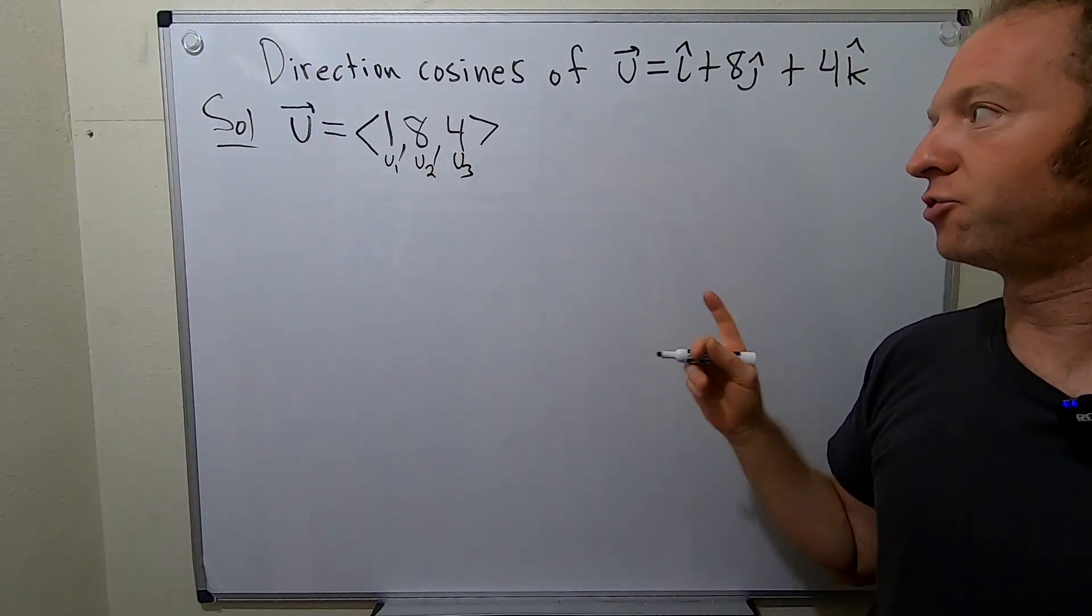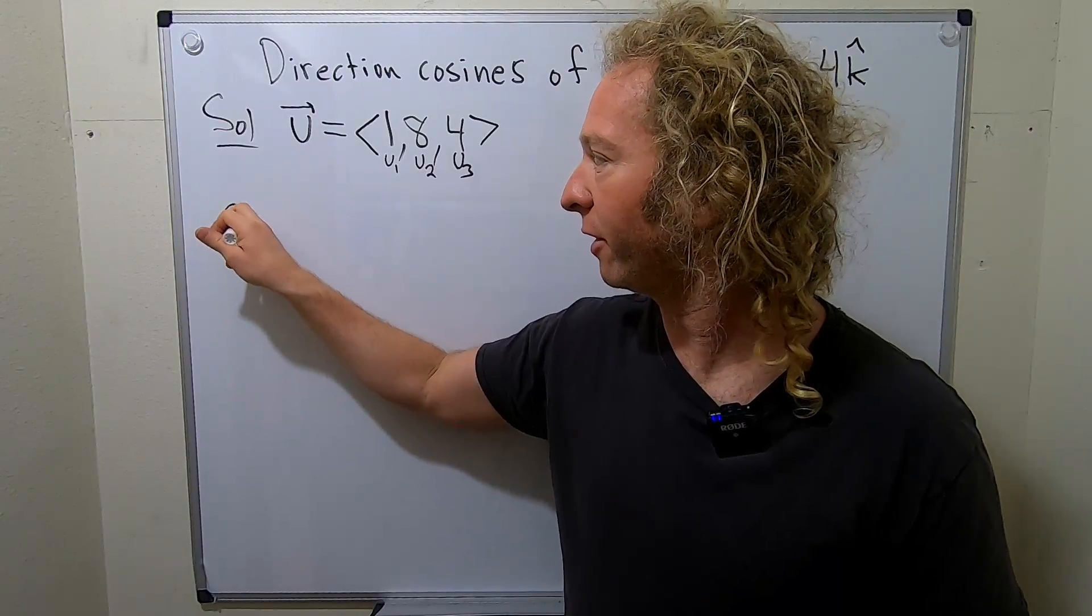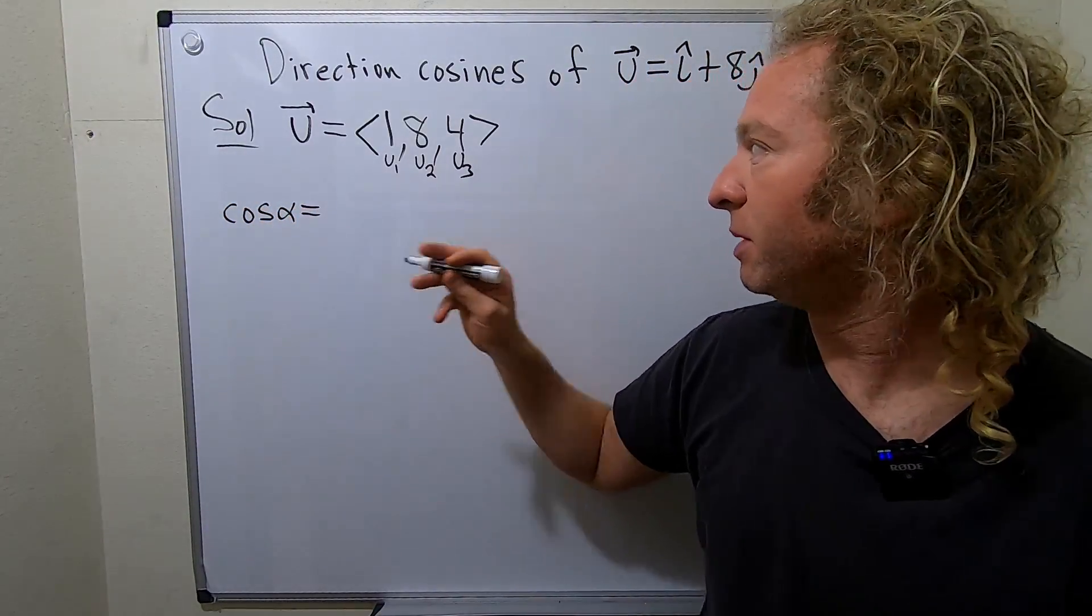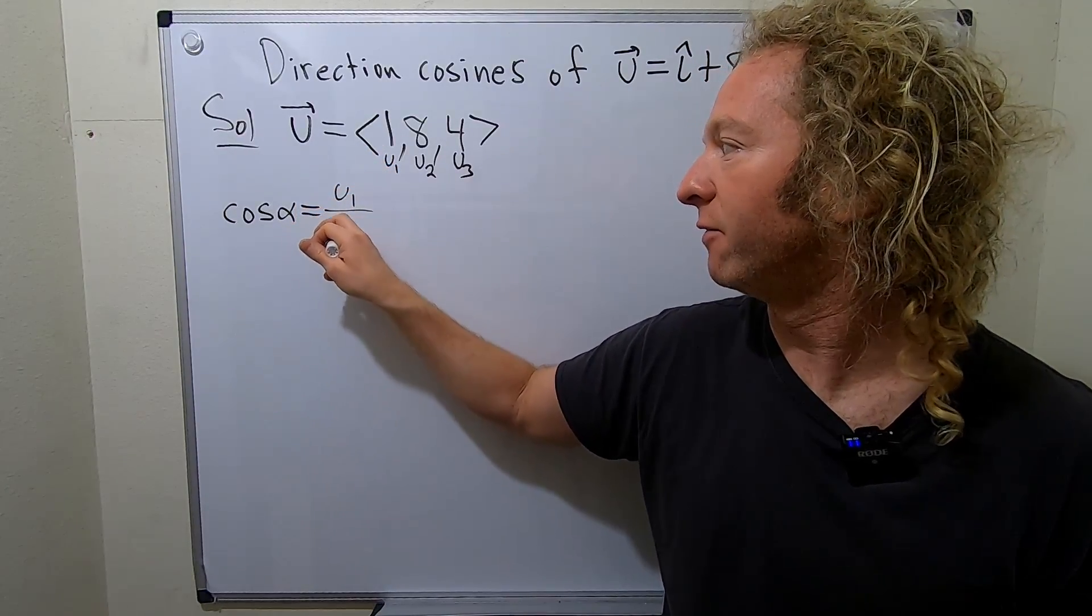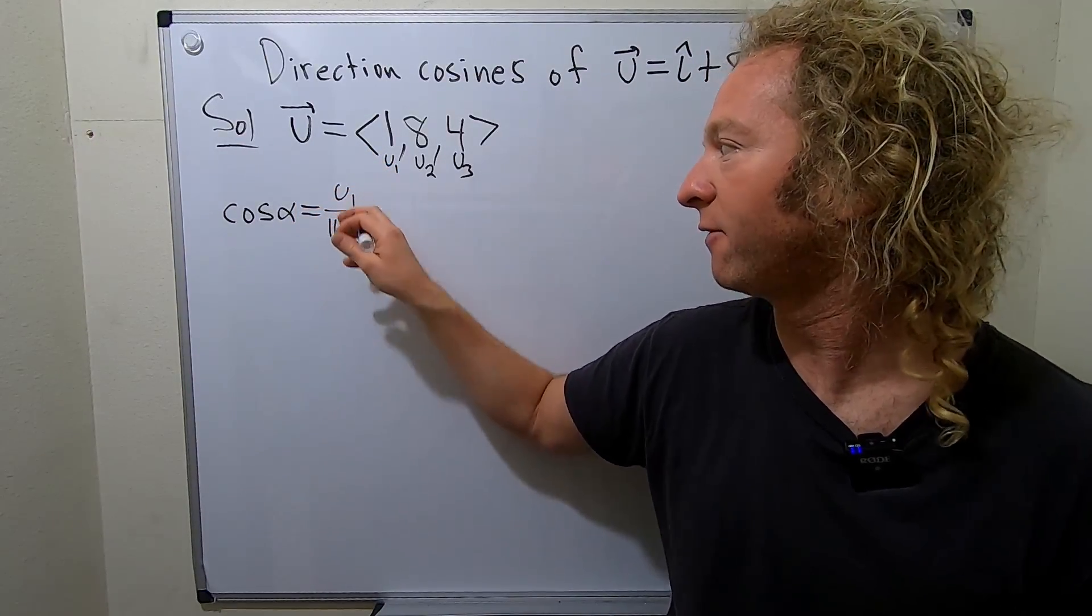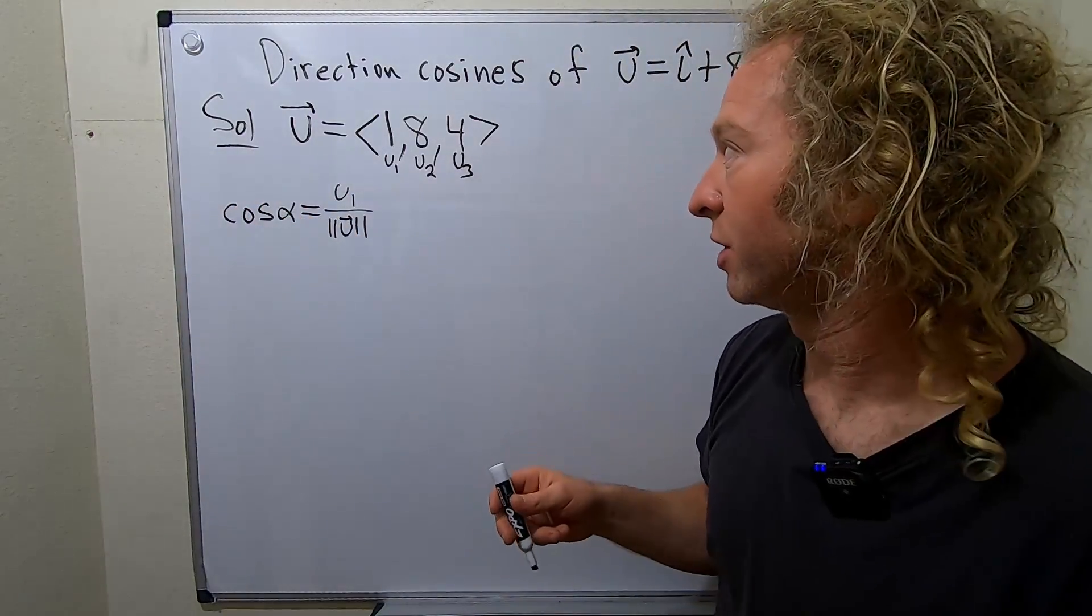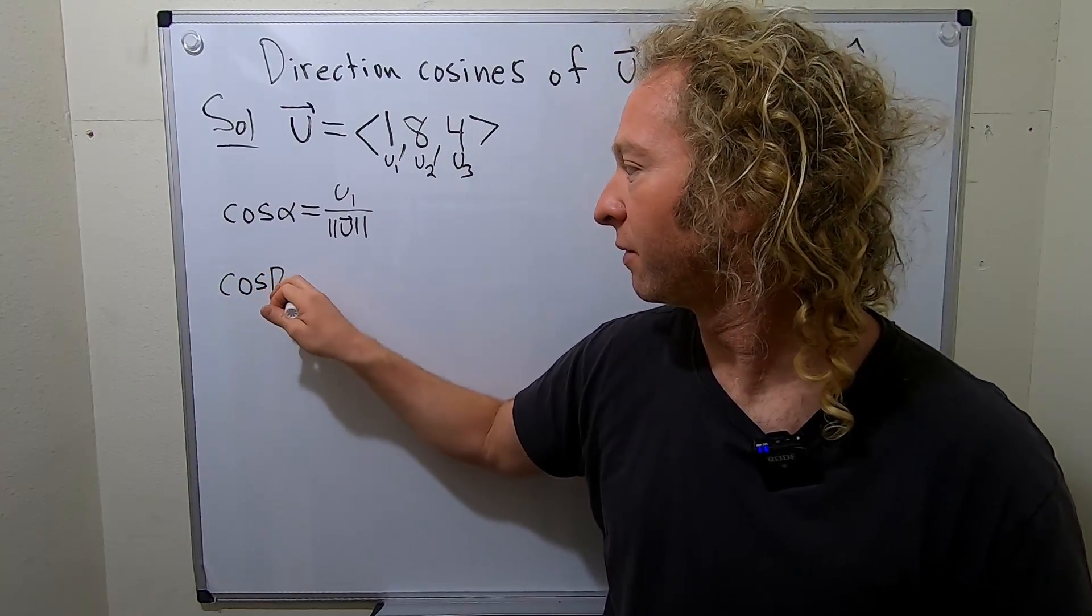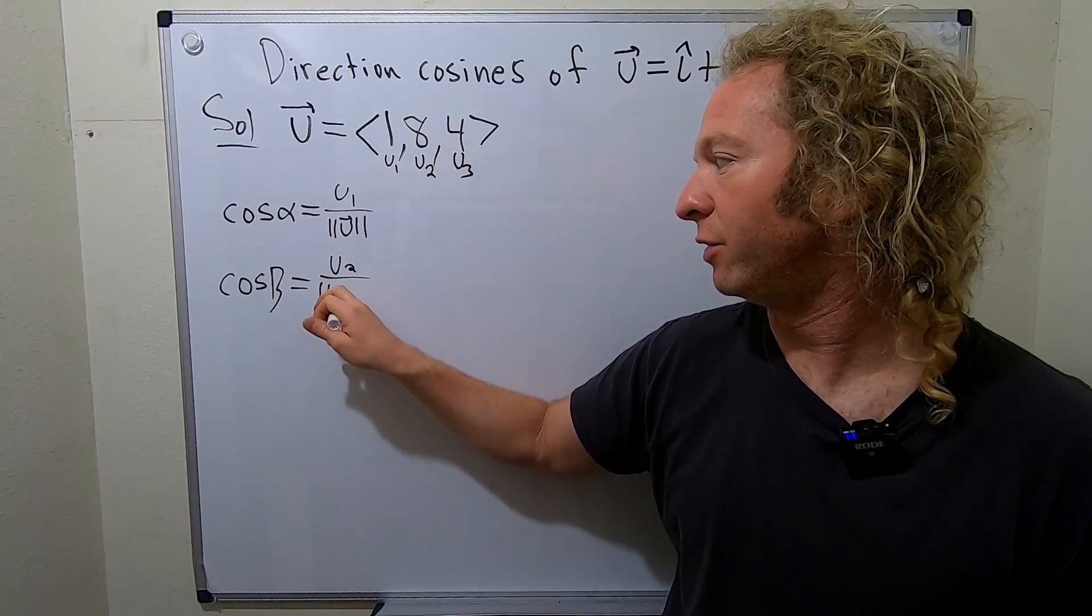So, the formula for the direction cosines is the following. The cosine of alpha is going to be u1 over the magnitude of the vector u. So, we'll have to find the magnitude. That'll be the first direction cosine. And then the other one will be the cosine of beta, and it'll be u2 over the magnitude of u.